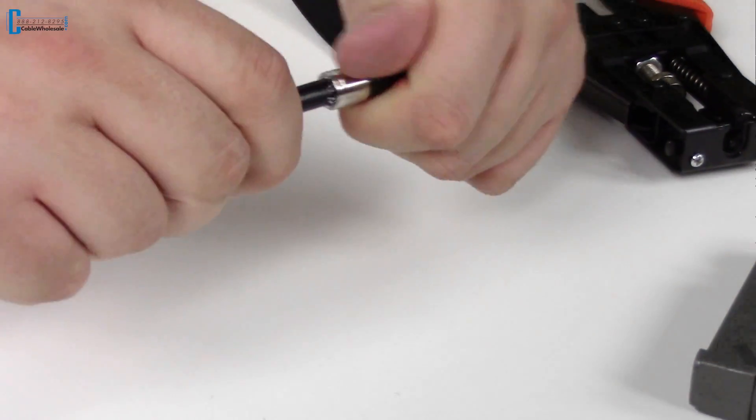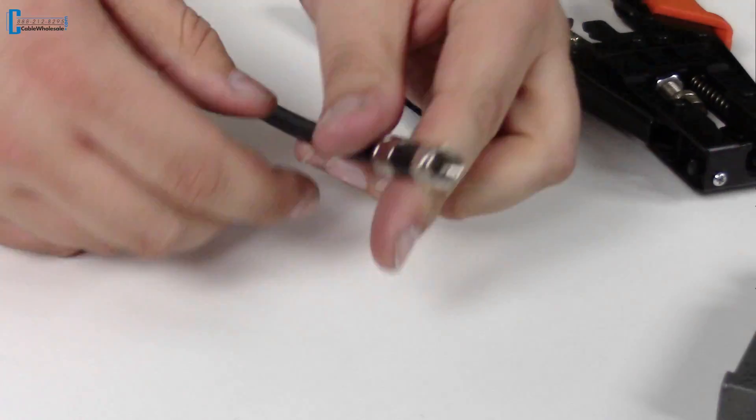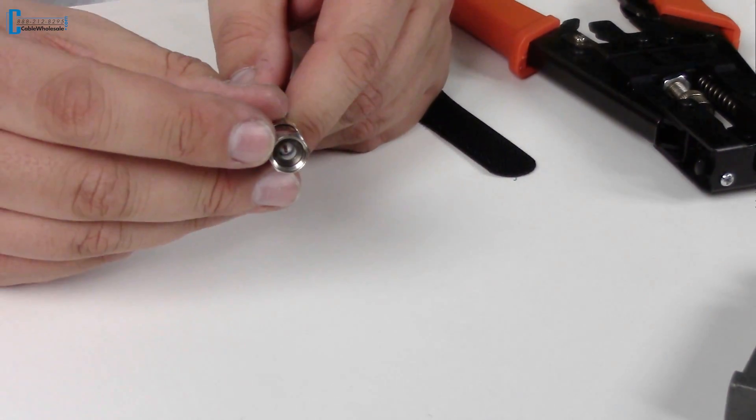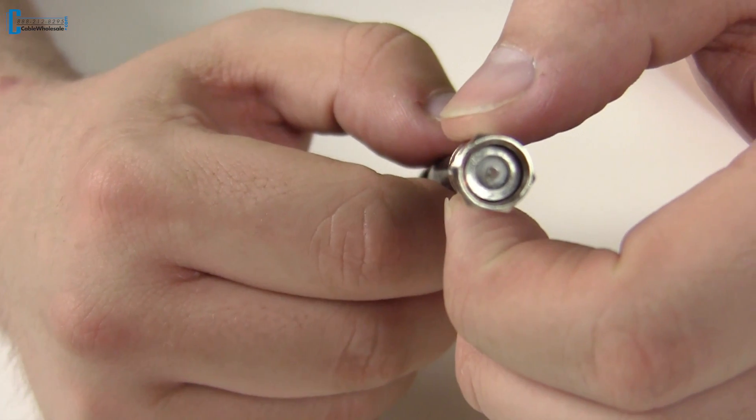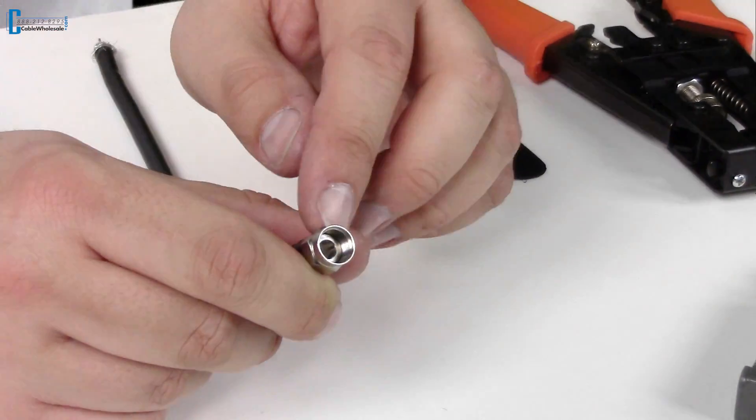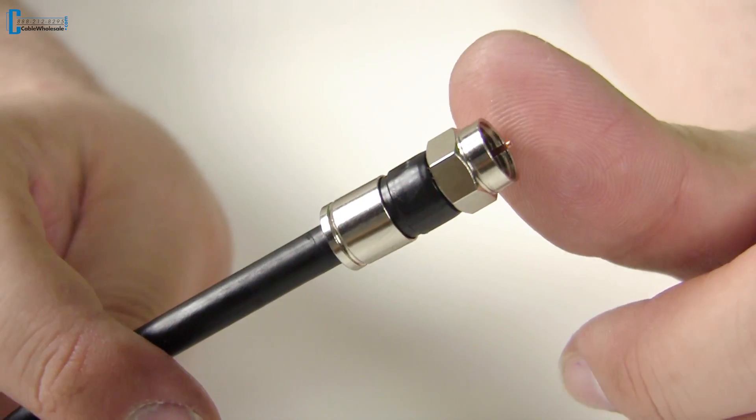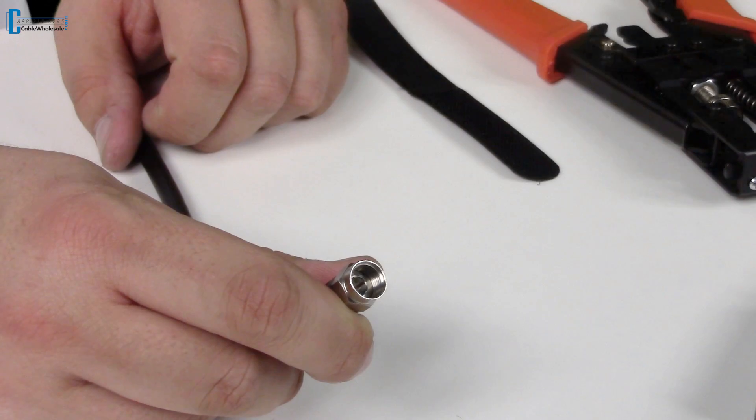And it just simply twists in. Just push and twist. You'll know it's gone in far enough when the white foam dielectric comes flush with the inner circle on the other side when you flip over the cable. The center conductor will protrude just a little bit through the end of the F-pin connector. And that's what creates the F-pin cable.